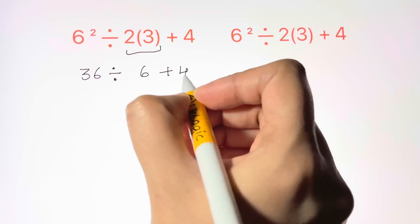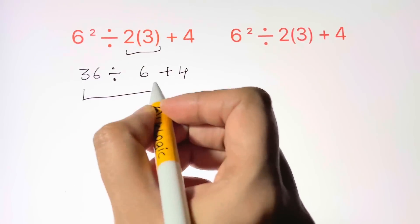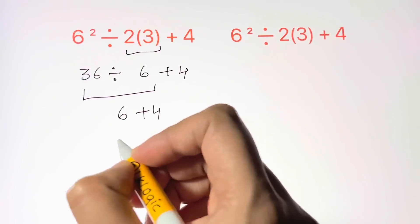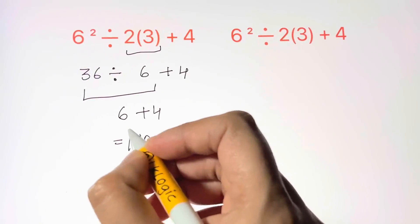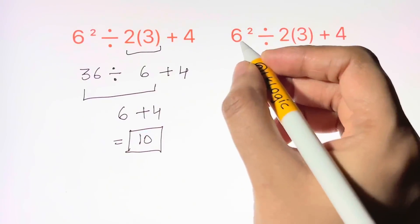Write the equation as it is. Next we do 36 divided by 6, that is 6, and we have plus 4. 6 plus 4 gives us 10, and that's one of your answers.